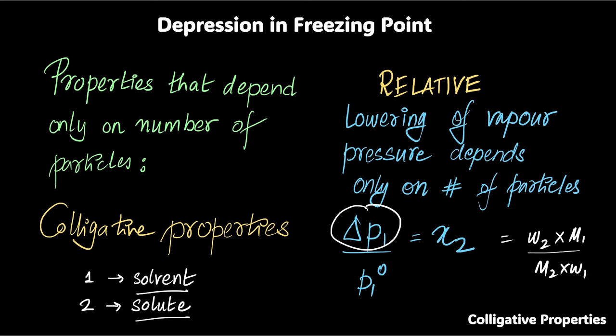Delta P1 is the lowering of vapor pressure. Relative to the vapor pressure of the pure solvent, this ratio is going to be equal to the mole fraction of the solute, which simplifies through this expression, only and only when N2 is much lesser than N1. Let's get back to what we are talking about. Freezing point is clear. What is depression in freezing point, and what does it have to do with colligative properties?